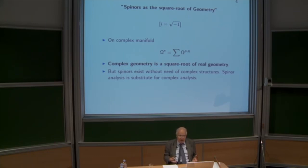So when you have complex geometry, you've found a square root inside the real geometry. The complex structure has given you a square root. But spinors exist without the need of a complex structure. So what is a spinor when there is no complex structure? That's really the question.